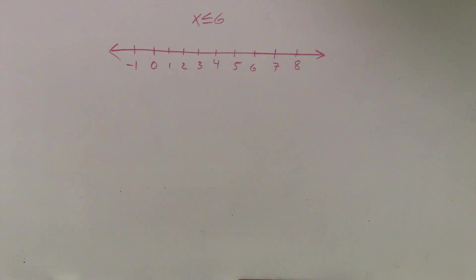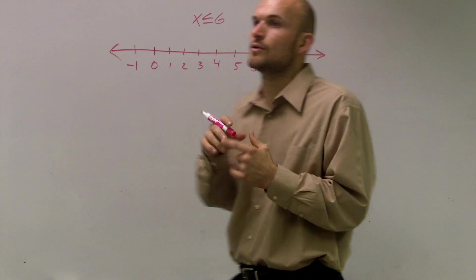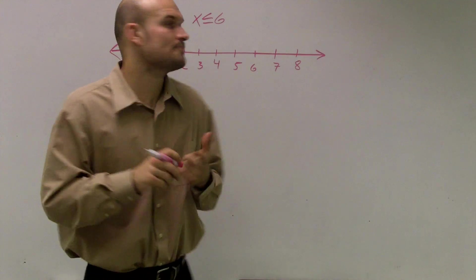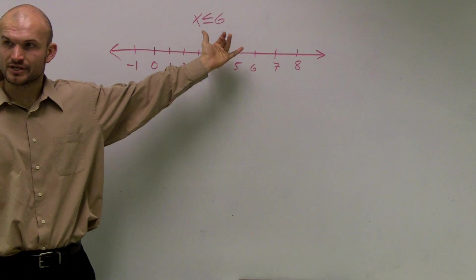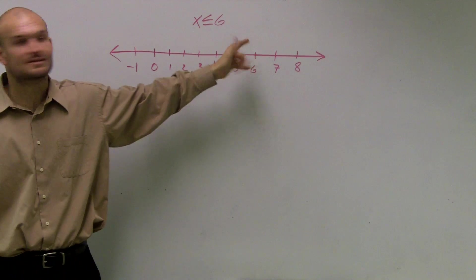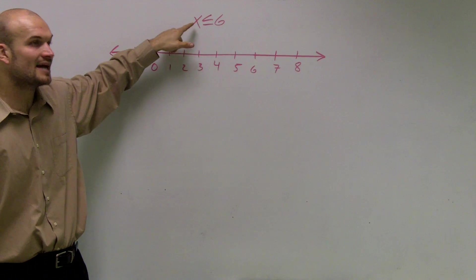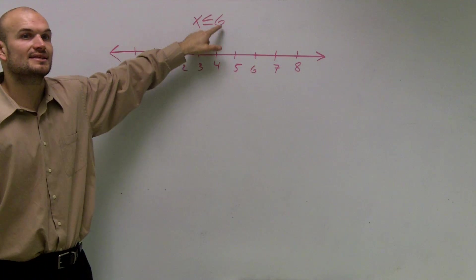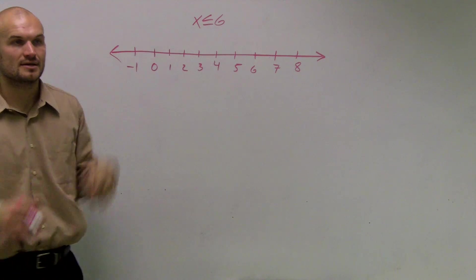All right. When doing these inequalities, it's important for us to understand what the symbol is. So the symbol is just like our equation, but now we'll call these inequalities. And what this symbol says is less than — so it says x is less than or equal to 6.